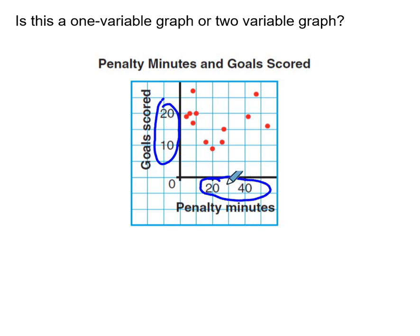And it compares to how many penalty minutes does a player have. So notice there are two numbers that are changing, and therefore this is a two variable graph and represents two variable data.